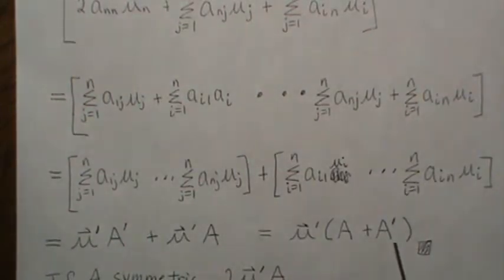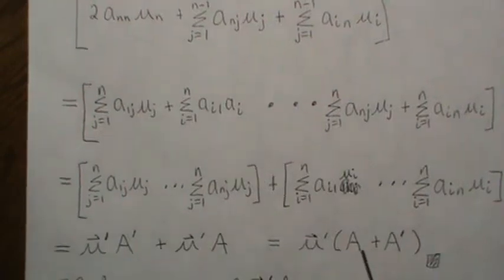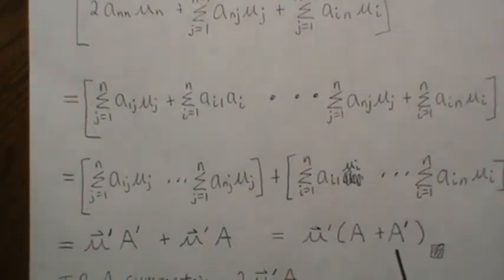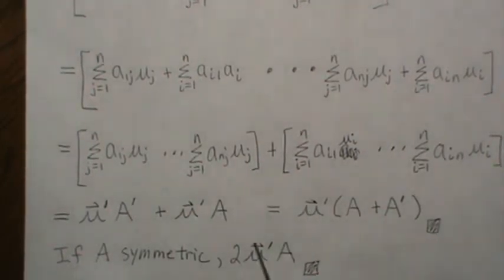We can factor out μ' from each of those and get μ'(A + A'). That's the derivative of a quadratic form with respect to a vector. Now if A is symmetric, then A = A', and we can write this simply as 2μ'A — the 2 comes out front and we get this result.